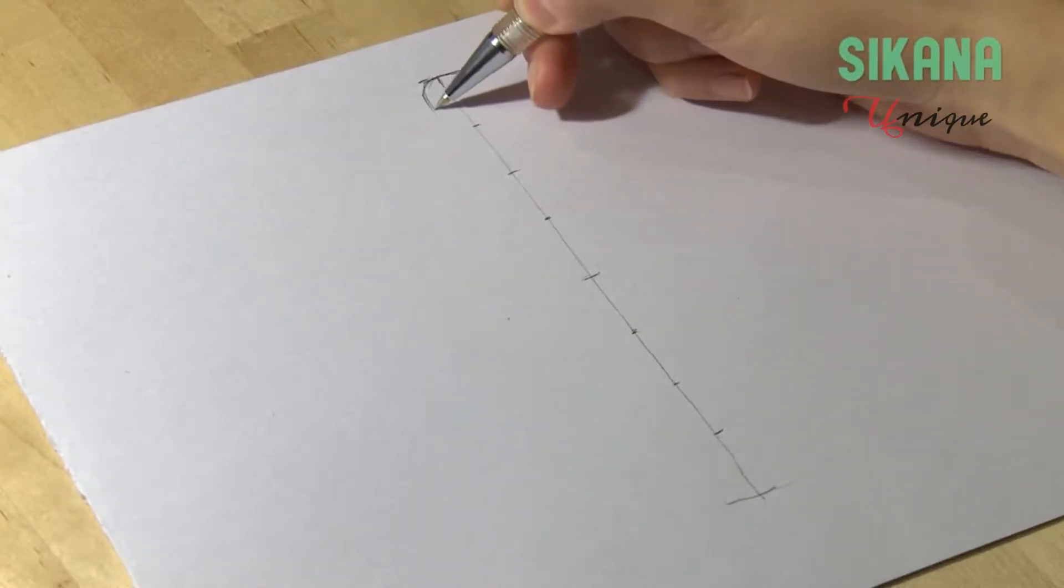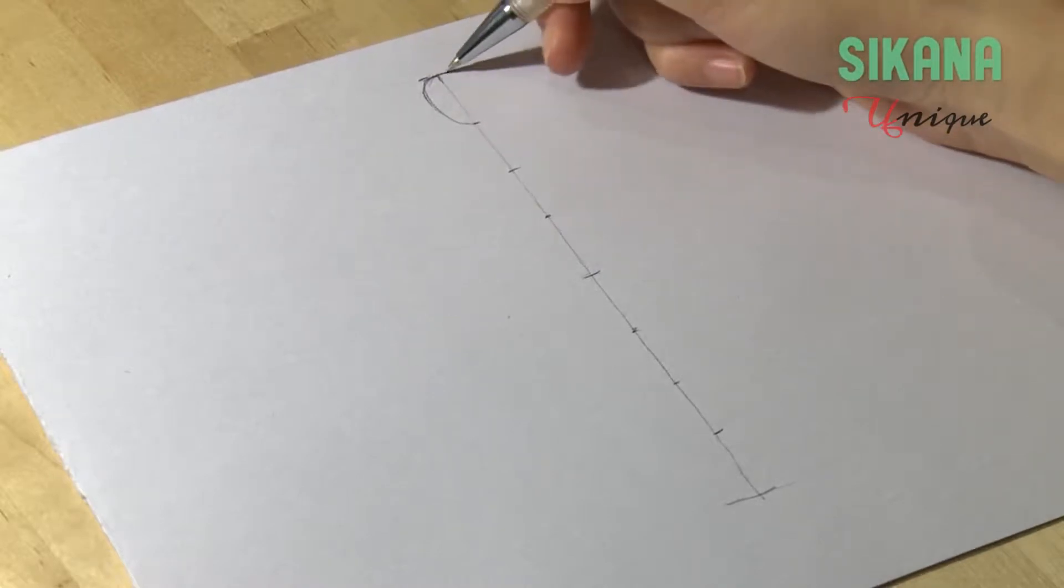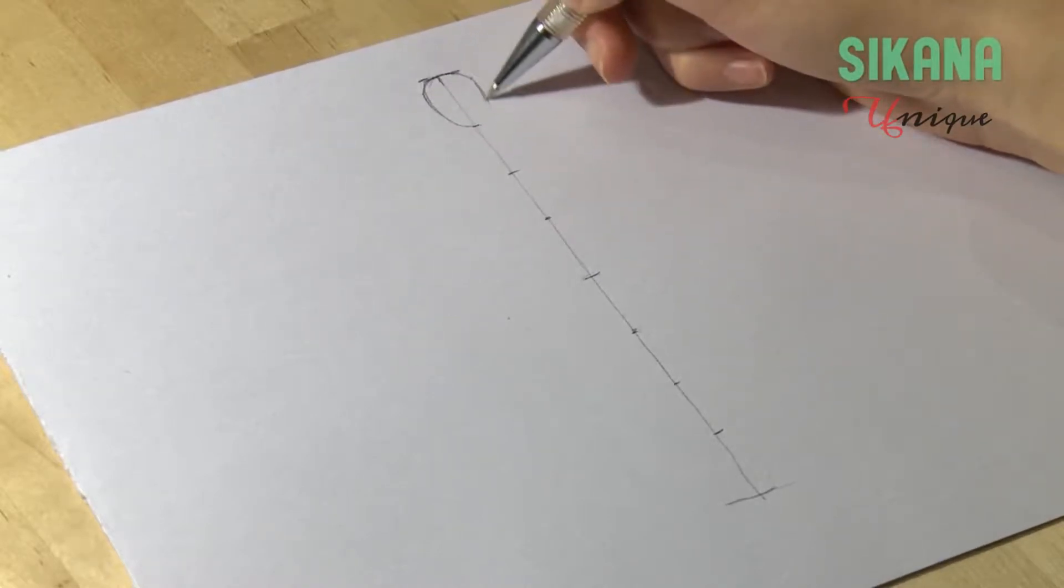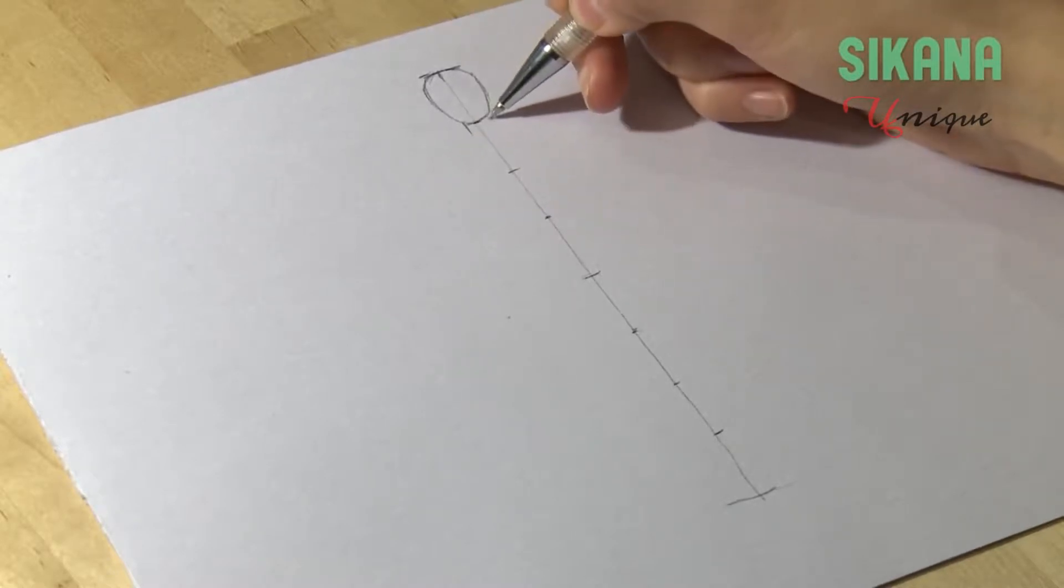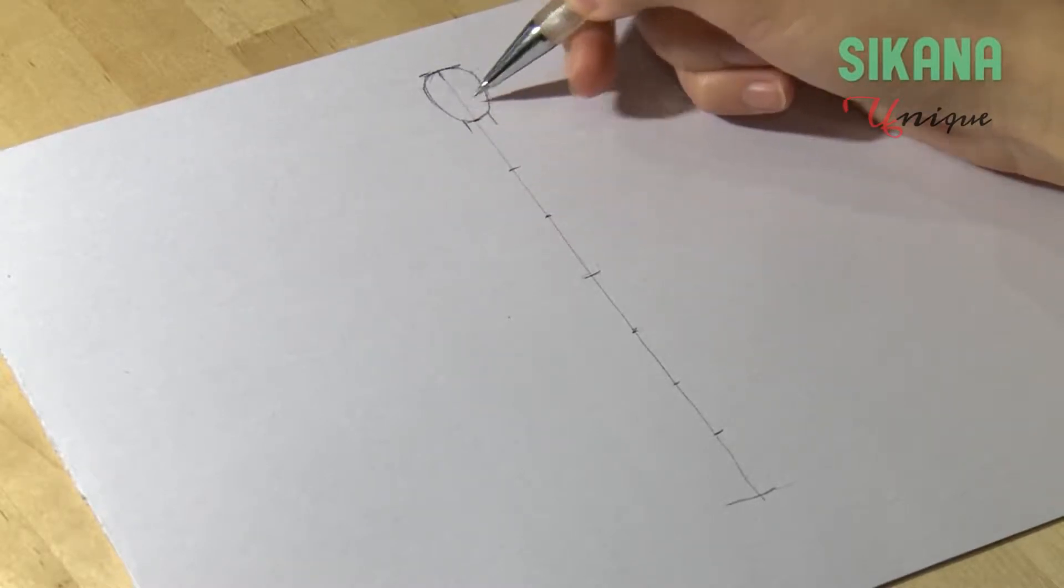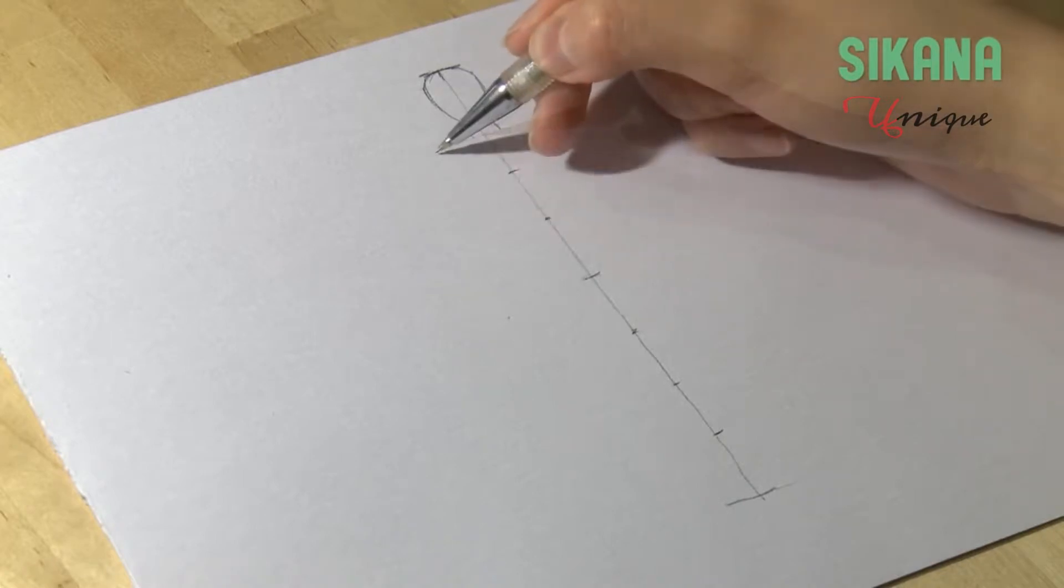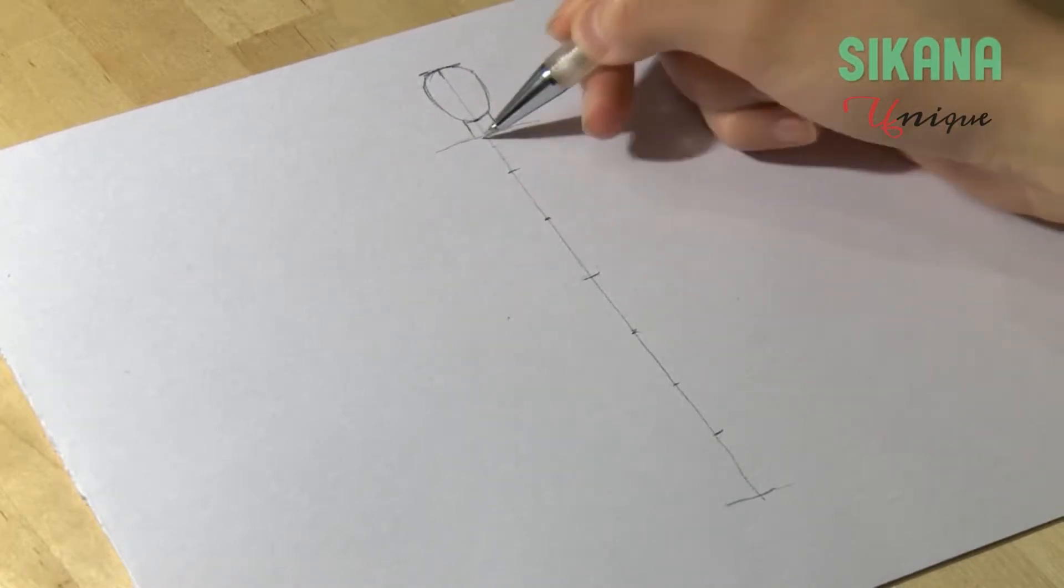First, you need to draw the head. The length of the neck is one quarter of the head. The shoulders are twice as wide as the head is long.